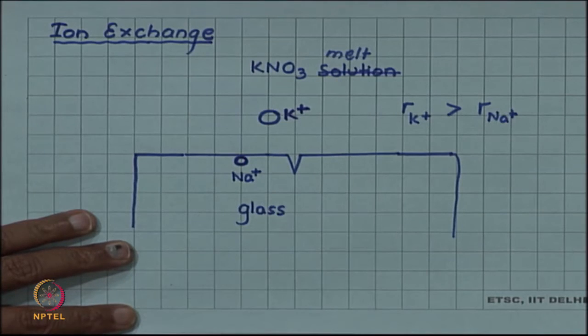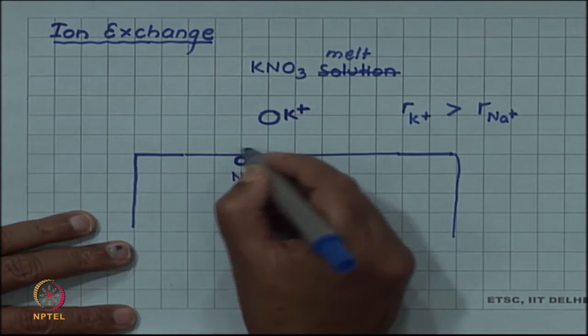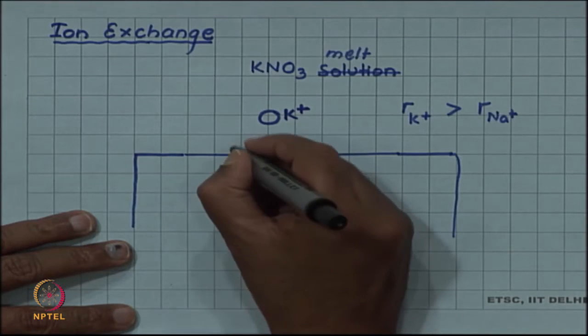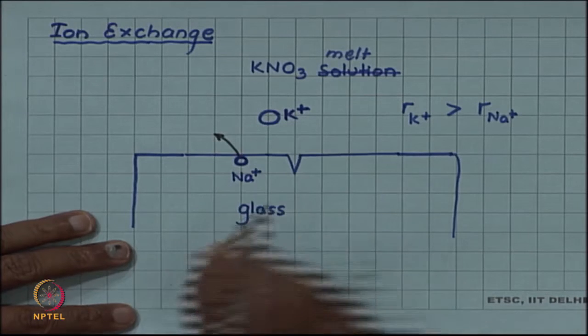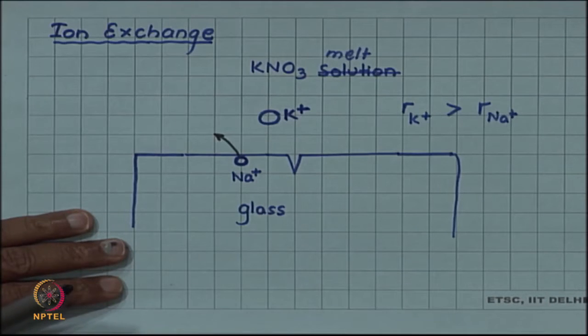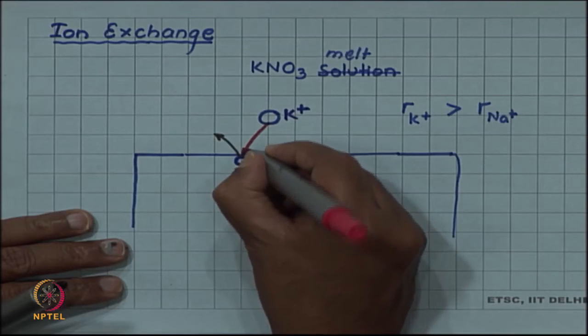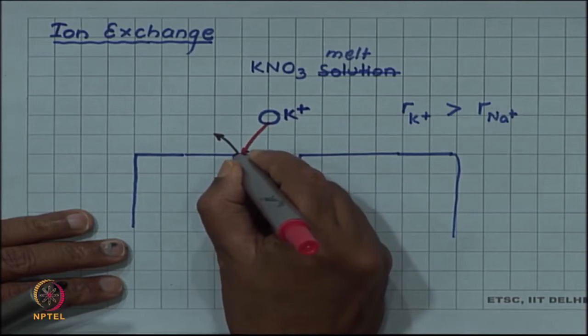Chemically when this reaction takes place with the KNO3, the sodium ions go into the melt whereas potassium ions comes and replaces the sodium ion. That is why the name ion exchange.